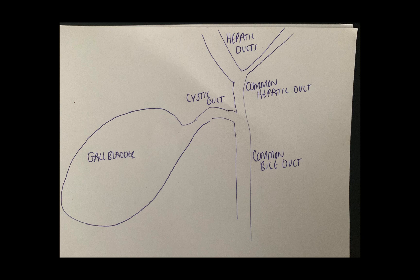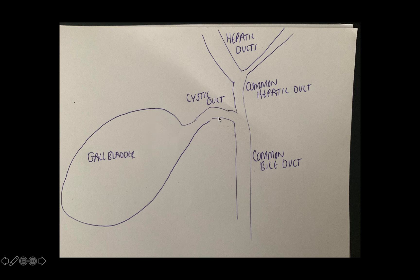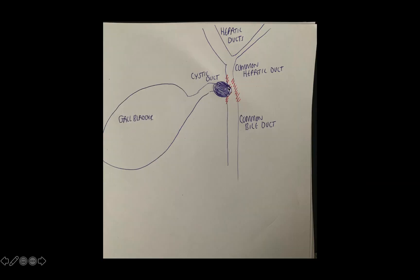Gallstones are usually formed from bile when it's in stasis. Bile is actually stored within the gallbladder, and when bile is not fully emptied from the gallbladder it can precipitate a sludge and subsequently form gallstones. If one of these stones gets stuck in the infundibulum, which is the upper part of the gallbladder, or the cystic duct itself, it can cause compression of the common hepatic duct or common bile duct.